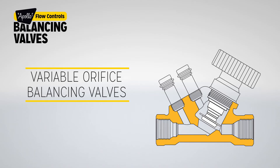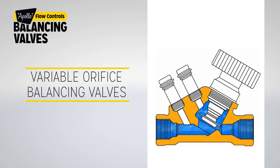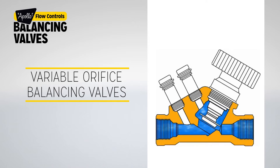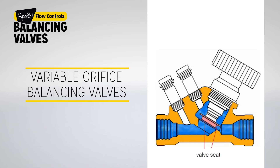Variable orifice balancing valves: a variable orifice double regulating valve is designed to permit measurement of the flow by measuring the differential pressure across the seat of the valve. The CVS changes each time the setting is altered. A variable orifice double regulating valve is recognized by the position of its measuring points, situated on either side of the regulating disc to measure flow across the valve mechanism. It is characterized by the feature of measuring the flow rate across the seat of the valve.